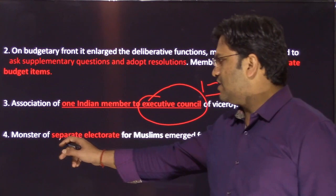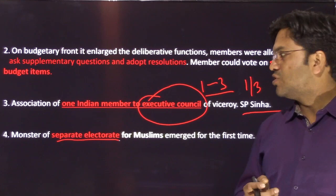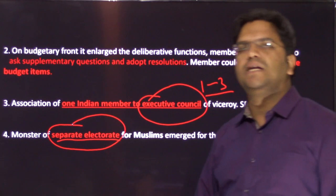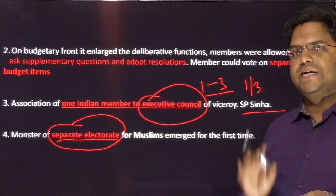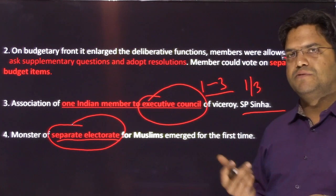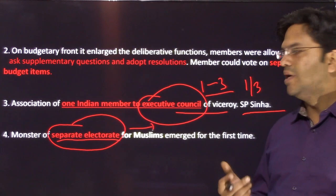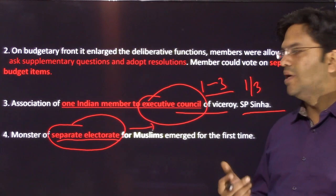The fourth provision: as discussed in the context, a unity had formed in Bengal between the two major dominant religions — Hindus and Muslims. To break that unity, separate electorates are being introduced. Context drives the provisions: you demanded legislative reforms, you're getting legislative council reforms; you showed too much unity that could endanger colonialism, so you're getting separate electorates. Everything is coming from context.